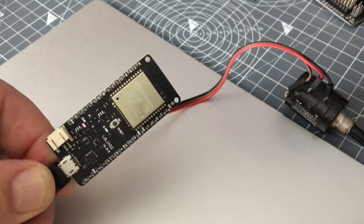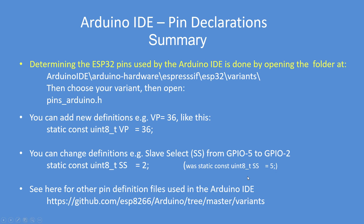In summary: you can determine the pins used by inspecting the pins_arduino.h file. You can add new definitions - as many as you like - but they obviously need to correspond with a real GPIO pin. You can change pin numbers; I changed slave select from pin 5 to pin 2. You can do the same on all the other board examples. There's also a link to the ESP8266. Hope you found that useful - enjoy!